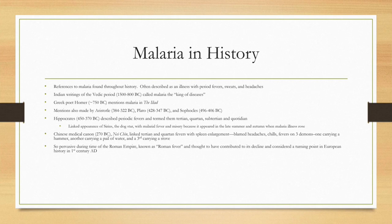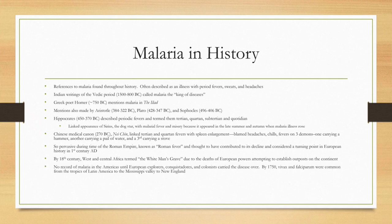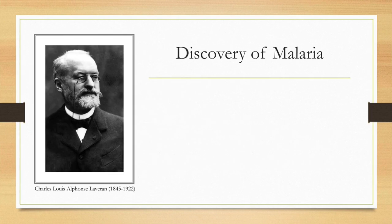Malaria was so pervasive during the time of the Roman Empire that it was known as the Roman fever, and it possibly contributed in part to Rome's decline. In the 18th century, West and Central Africa termed it the white man's grave due to deaths of European powers attempting to establish outposts on the continent. There is no record of malaria in the Americas until European explorers brought the disease over. By 1750, vivax and falciparum were common from the tropics of Latin America to the Mississippi Valley to New England.